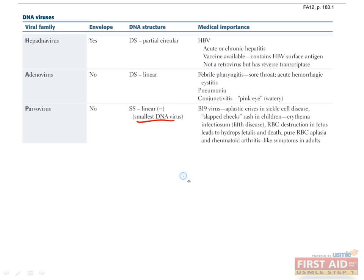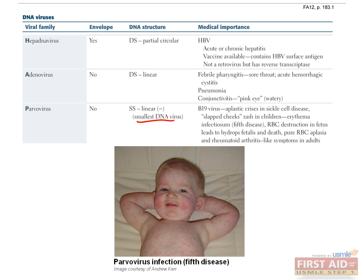Parvovirus is the smallest clinically important virus, measuring only 20 to 25 nanometers. It is responsible for one of the five most common causes of pediatric rashes, known as erythema infectiosum, which also goes by fifth disease or slap cheek rash. The name comes from the bright red rash that appears on the cheeks of infected children, along with a lacy red rash on the rest of the body.